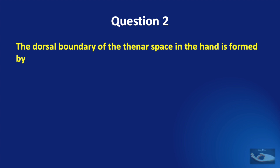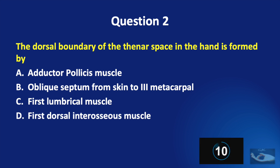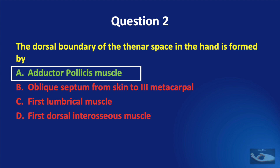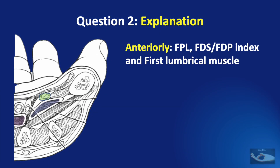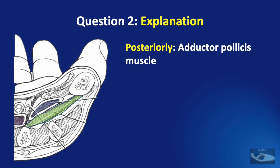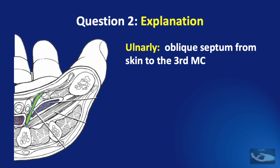Question number two: the dorsal boundary of the thenar space in the hand is formed by — adductor pollicis muscle, oblique septum from the skin to the third metacarpal, the first lumbrical muscle, or first dorsal interosseous muscle? The answer is A, adductor pollicis muscle. In cross-sectional anatomy of the palm: anteriorly are the tendons of flexor pollicis longus, flexor digitorum superficialis and profundus of the index finger, and the first lumbrical. Posteriorly it is bounded by the adductor pollicis muscle. On the radial side, it is limited by the insertion of the adductor pollicis into the proximal phalanx of the thumb. On the ulnar side is the oblique septum from the skin to the third metacarpal.